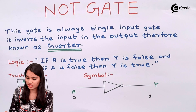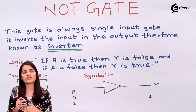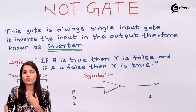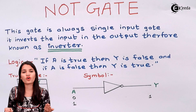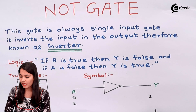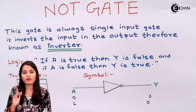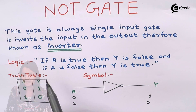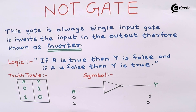Now consider the second condition, where the input is one. For a one input, the opposite value of one is zero, therefore the output will be zero. If one is a true value, then the output will be a false value. So this is what the logic says: if A is true, then output Y will be false; and if A is false, the output Y will be true. This is the overall scenario for the NOT gate.